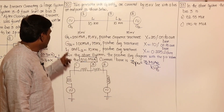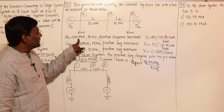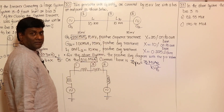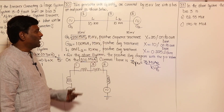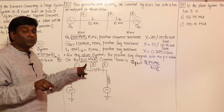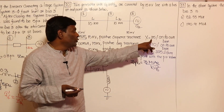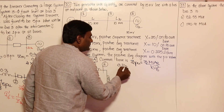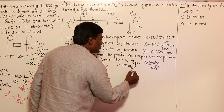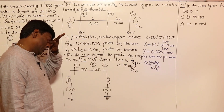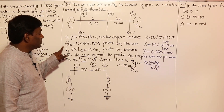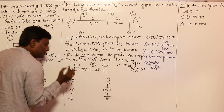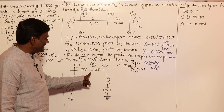Per-unit impedance is directly proportional to MVA base. For G1 at 250 MVA, reactance is 0.25 per unit; converting to 100 MVA base: 0.25 × (100/250) = 0.1 per unit. Similarly G2 is already on 100 MVA base so remains 0.1 per unit.